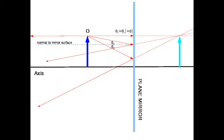Now consider another ray that makes some angle theta-2 with respect to the normal to the mirror surface. I've drawn a dashed line labeled 'normal to mirror surface,' perpendicular to the plane mirror at the point where the second ray strikes. The law of reflection tells us it will be reflected at an equal angle theta-2 on the other side of the normal. Using a precise drawing program, I can make these angles exact and draw the reflected arrow coming out at angle theta-2 with respect to the axis, diverging away from the first reflected ray.